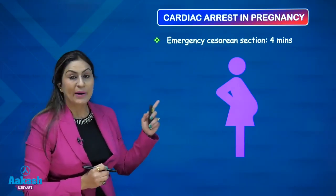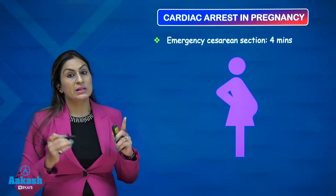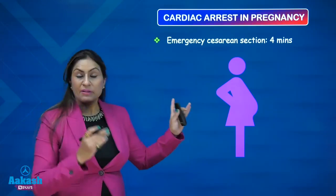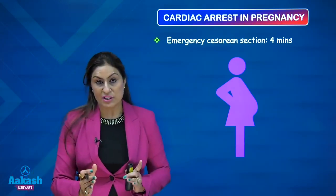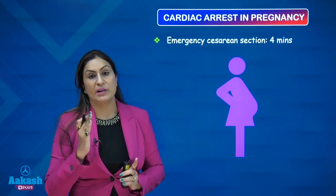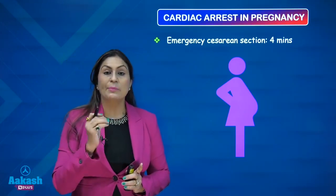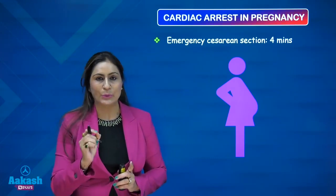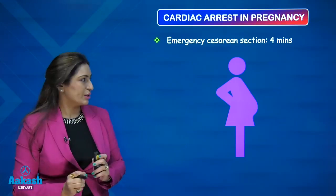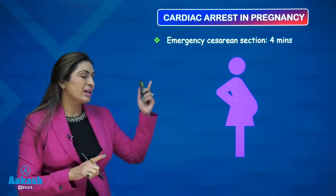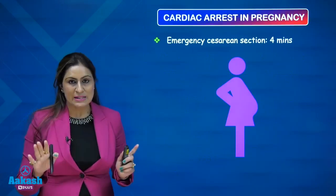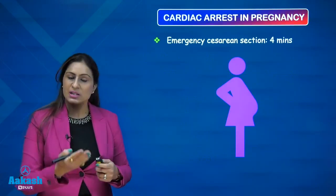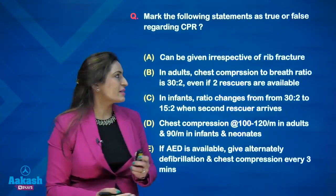If a pregnant woman is a victim in cardiac arrest, delivering the fetus within 4 to 5 minutes by performing an emergency cesarean section is a high-priority goal and can save the child. The rest of the CPR parameters remain the same — push fast, do the chest compressions.